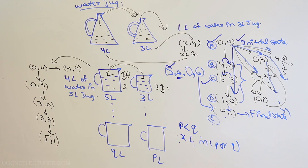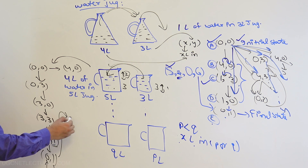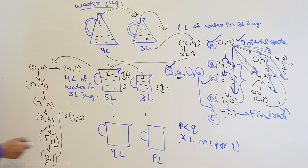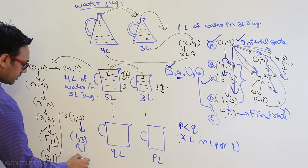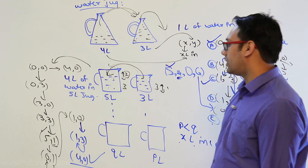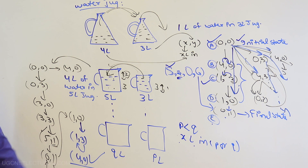Now we have one liter in the three liter jug. Empty the five liter jug: state (0, 1). Transfer the one liter into the five liter jug: state (1, 0). Fill the three liter jug again: state (1, 3). Transfer those three liters into the five liter jug: state (4, 0). We have reached the desired goal — four liters in the five liter jug. This is a very interesting problem that takes practice.